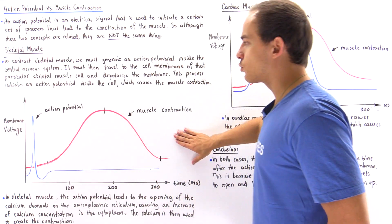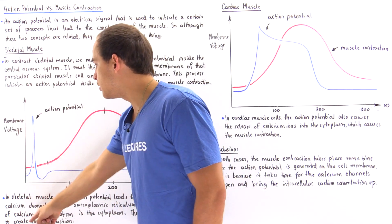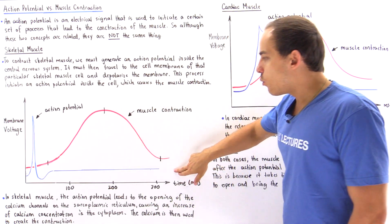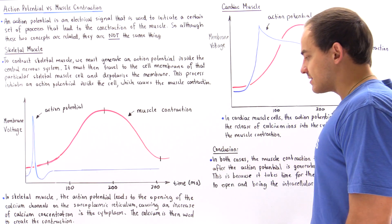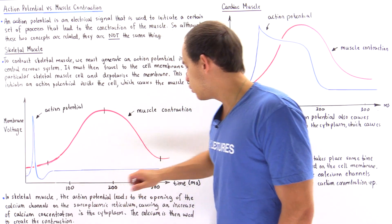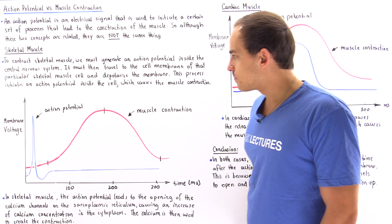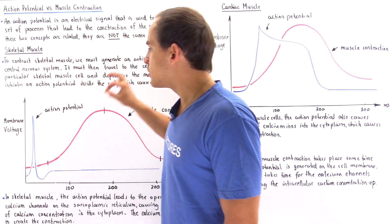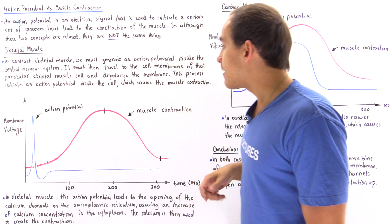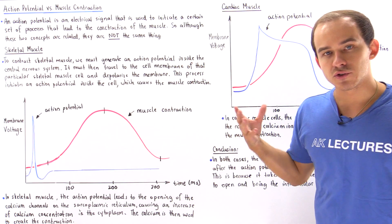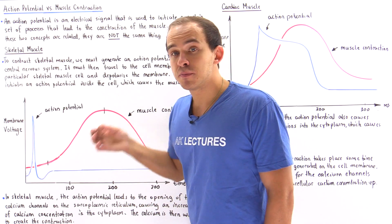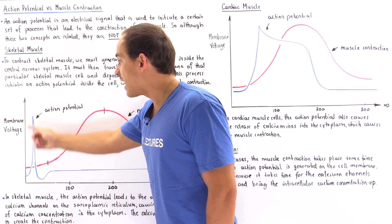Let's take a look at the following graph. The y-axis is the membrane voltage — as we go up, it becomes more positive and increases in size. The x-axis is time, given in milliseconds: 100 milliseconds, 200 milliseconds, 300 milliseconds, and so forth. The blue graph is the action potential as it is generated on the membrane of that skeletal muscle cell. The red graph describes our muscle contraction. Notice that the muscle contraction takes place after the action potential actually occurred.